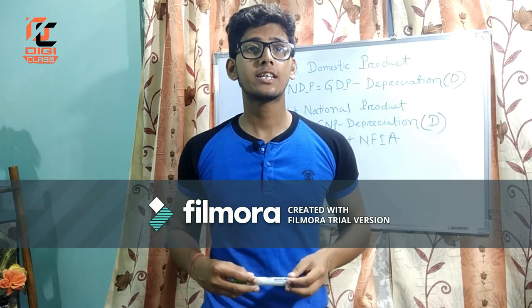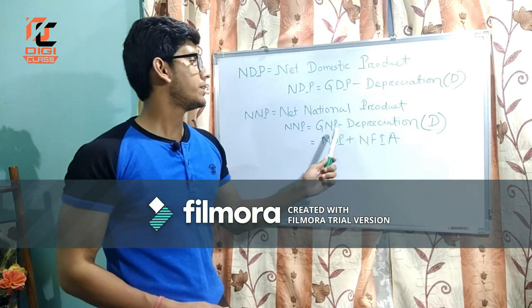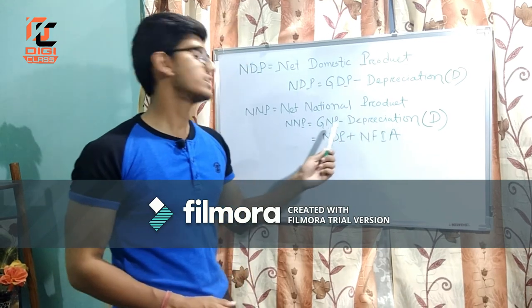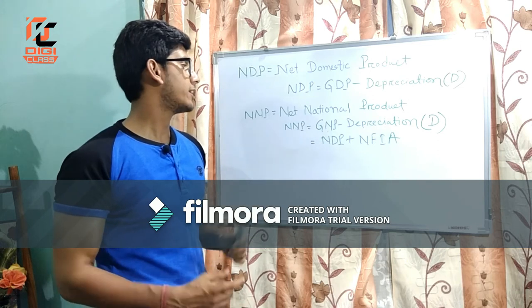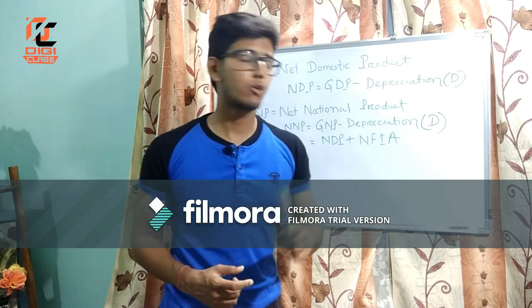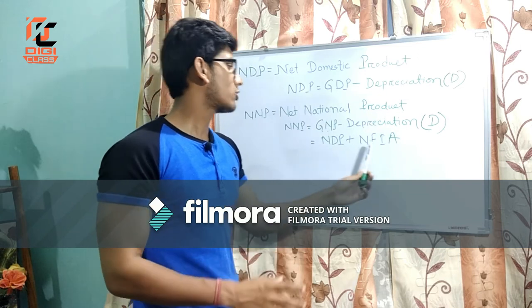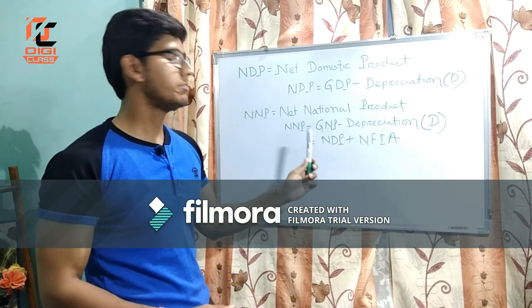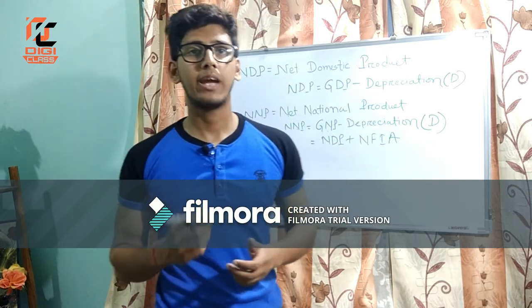Now let us understand what is NNP. NNP stands for Net National Product. It is the net value of the goods and services produced by a country. It can be derived with the formula: NNP = GNP minus depreciation. That means if we deduct depreciation from the Gross National Product, we get NNP. There is another formula: if we add Net Factor Income from Abroad to the NDP, we will also get NNP. This is the basic concept of NDP and NNP.